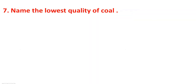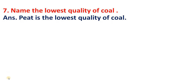Name the lowest quality of coal. Sabse low quality ka coal kaun sa hai? Peat is the lowest quality of coal. Peat jo hai, woh sabse nimn star ka koila hota hai. Dal dalo me jo paudhe hote hai, unse peat utpandh hota hai. Isme carbon kam hota hai, nami ki matra bahut adhik hoti hai, aur isme taap ki kshamta bahut nimn hoti hai, isliye ise sabse low quality ka koila mana jata hai.